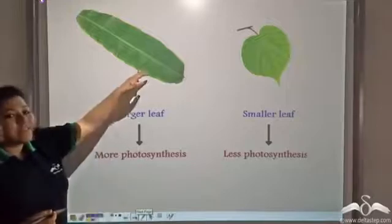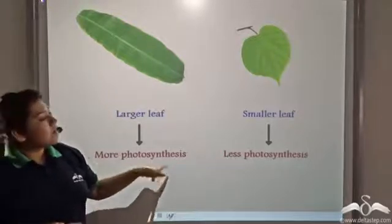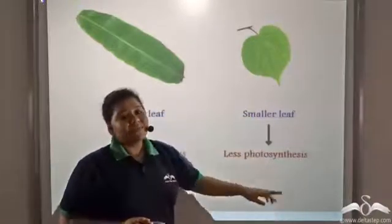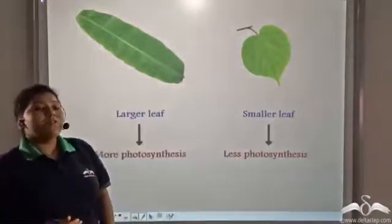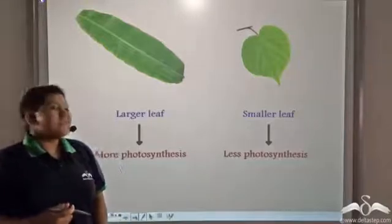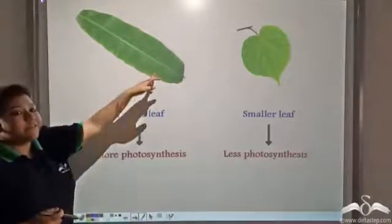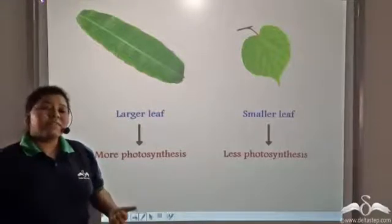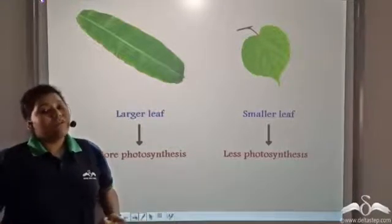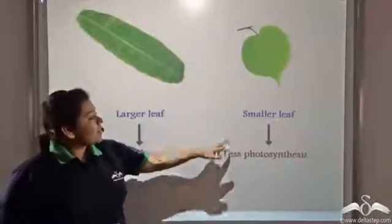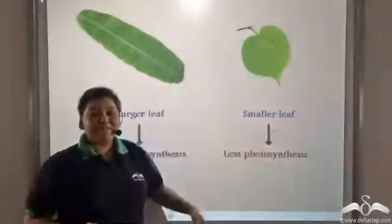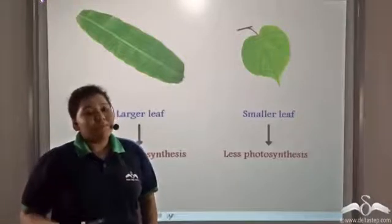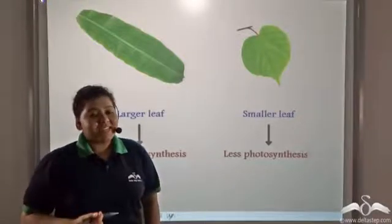Larger the leaf, more will be the photosynthesis. But if a leaf is small, then there will be less photosynthesis. Now what does that mean? Well, larger the leaf, more will be the amount of chlorophyll that will absorb more amount of light energy. But a smaller leaf will have less amount of chlorophyll, so it will absorb lesser light energy.